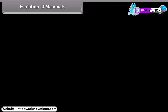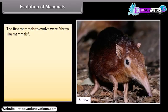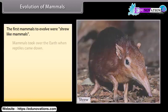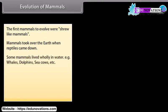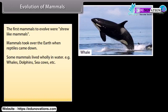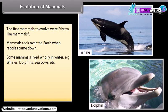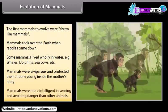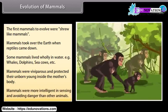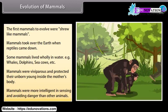The first mammals to evolve were shrew-like mammals. Mammals took over the earth when reptiles declined. Some mammals lived wholly in water — for example, whales, dolphins, and sea cows. Mammals were viviparous and protected their unborn young inside the mother's body. Mammals were more intelligent in sensing and avoiding danger than other animals.